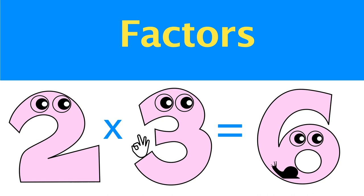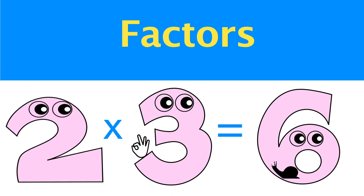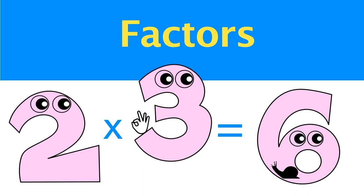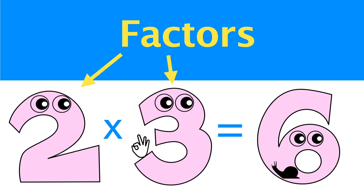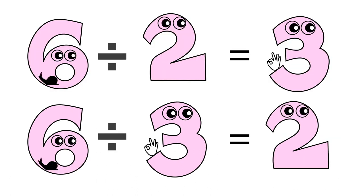Factoring of 6 is finding numbers to multiply to get 6. 2 times 3 equals 6, so 2 and 3 are factors of 6. In other words, a factor is a number that divides another number leaving no remainder. 6 divided by 2 equals 3 — no remainder. 6 divided by 3 equals 2 — no remainder.